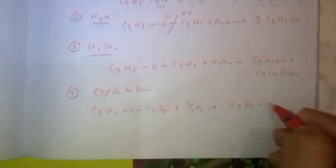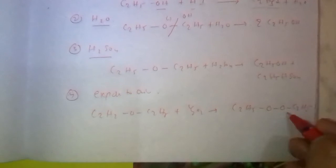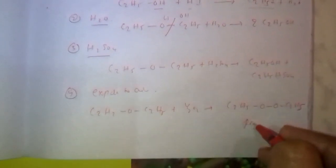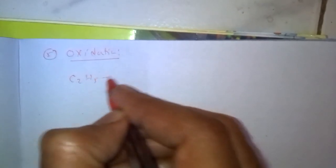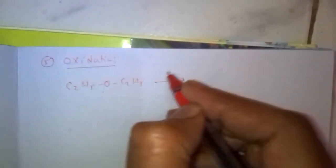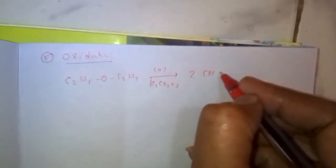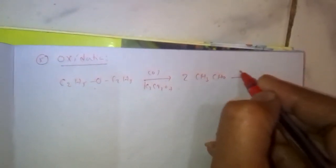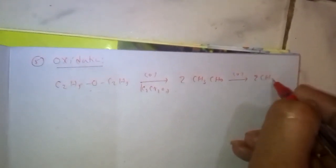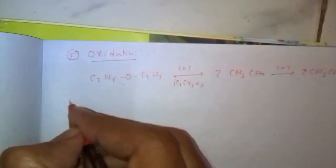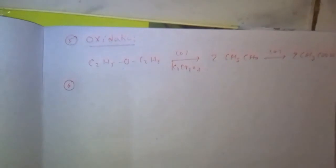Ethers on oxidation form carbonyl compounds. C2H5-O-C2H5, which on oxidation with strong oxidizing agent K2Cr2O7, then two moles of aldehyde is formed, CH3CHO, which on further oxidation converts to carboxylic acid CH3COOH.